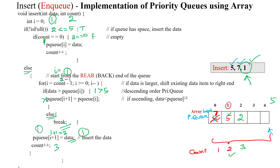Now the data is arranged in descending order based upon highest priority: 7 is the highest priority value, 5 is second highest, and 1 is the lowest. We are using comparisons n times, which is why the time complexity for inserting data into the priority queue is order of n. Thanks for watching.